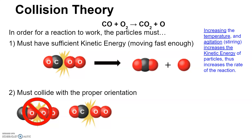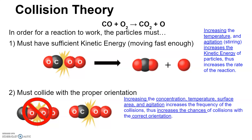So how do those factors relate to collision theory? Increasing temperature and increasing agitation increases the kinetic energy of the particles — you're making them move faster — so the reaction rate increases because more particles have the right kinetic energy. Increasing concentration, surface area, and agitation all increase the frequency of collisions. The more collisions happening at any given time, the greater the chances that collisions have the correct orientation, so the rate increases as well.